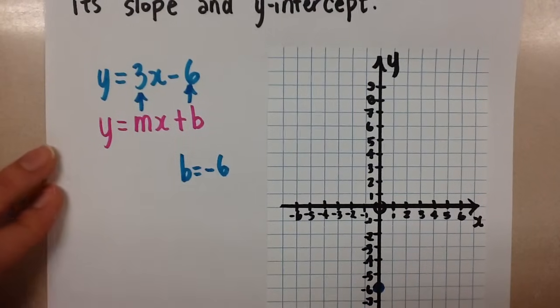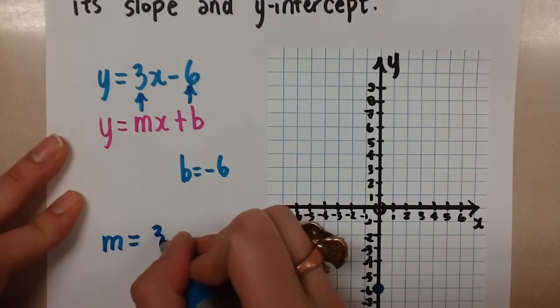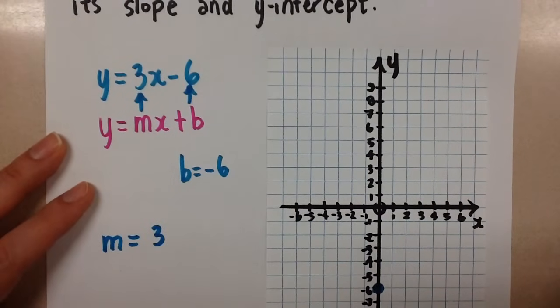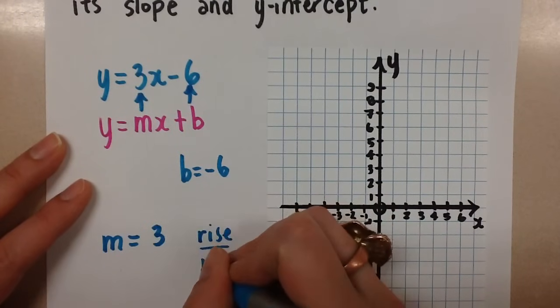Now let's look at the slope. The slope from the equation is positive 3. And if you remember, the equation for slope is rise over run.